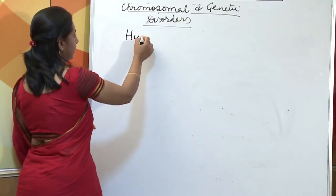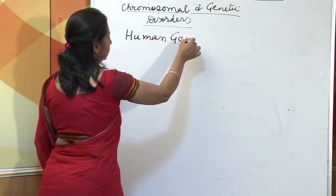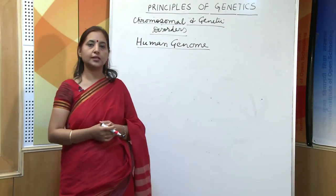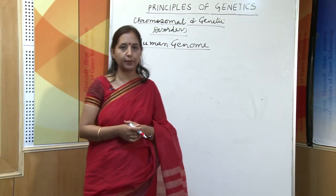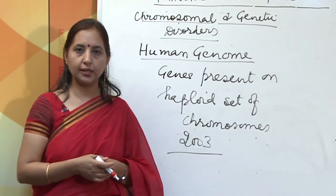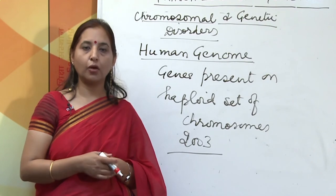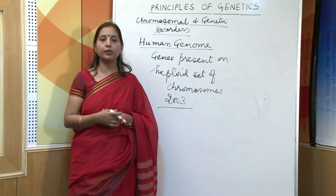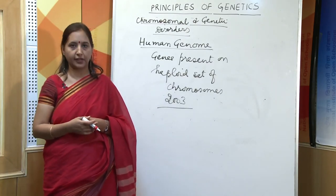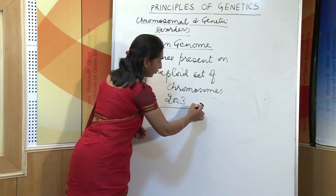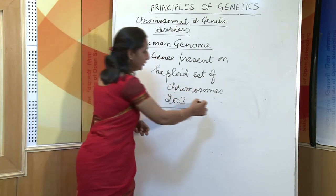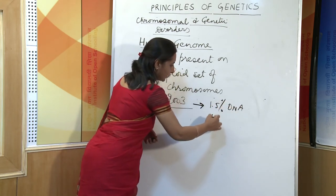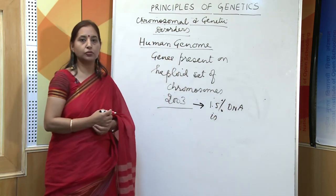The next topic is the human genome. Genome is the set of genes present on a haploid set of chromosomes. In 2003, the human genome project was completed, and all 25,000 genes have been identified. Scientists are looking forward to solutions to defects caused by defective genes. One of the most important findings is that only 1.5 percent of DNA codes for proteins or carries information for specific characters.